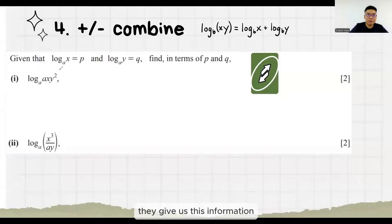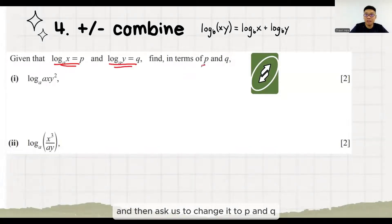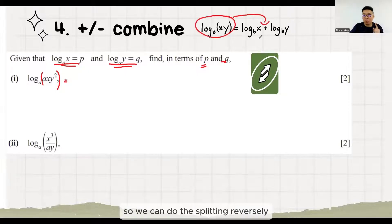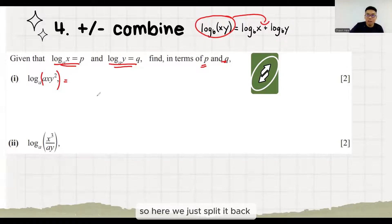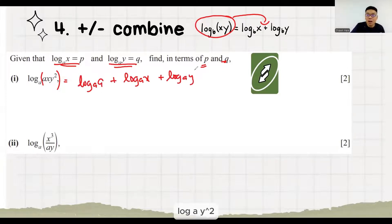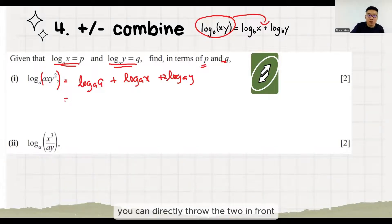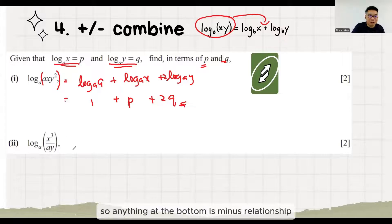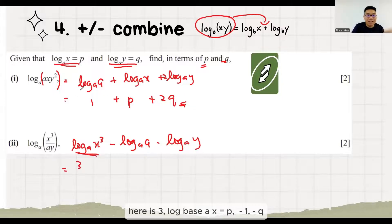Next, they give us information and ask us to change it to P and Q. This is a single log base A that has A, X, Y all in a times relationship. So we can do the splitting. Reversely, previously we know logs with the same base in a plus or minus relationship can be joined into a single log. So here we just split it back. Log A of Y squared — you can directly bring the 2 to the front. Log A of A — same base, same number, it's just 1. Log A of X is P. Log A of Y is Q. Next, anything at the bottom is a minus relationship. Here is 3. Log base A of X is P, minus 1, minus Q. Done.